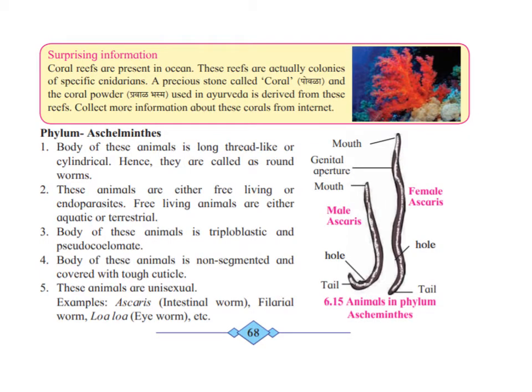Phylum Aschelminthes — the body of this animal is long, thread-like, or cylindrical, hence they are also called roundworms. The previous phylum had flatworms; these are roundworms. They are also free living but most of them are endoparasites. The free-living ones are either aquatic or terrestrial.